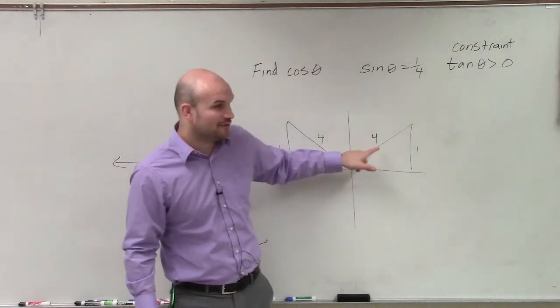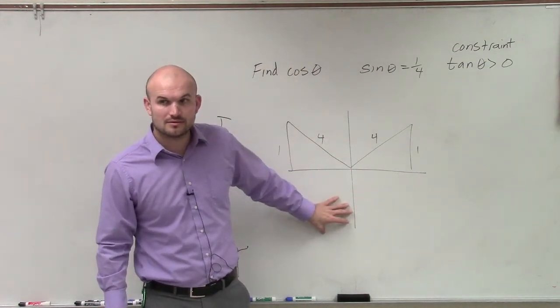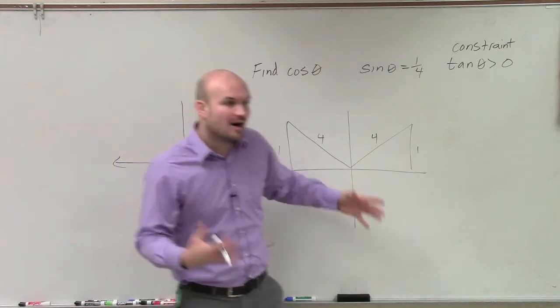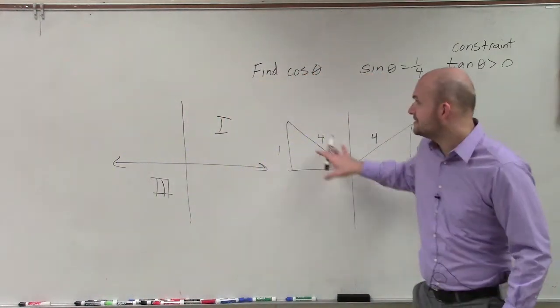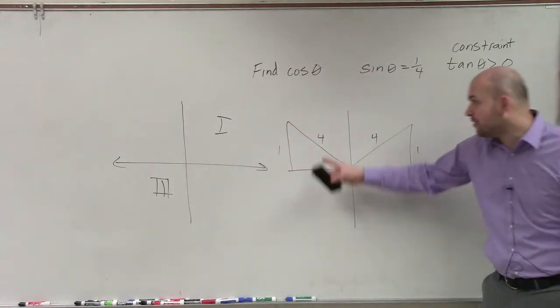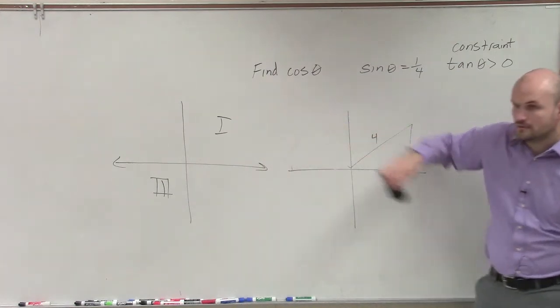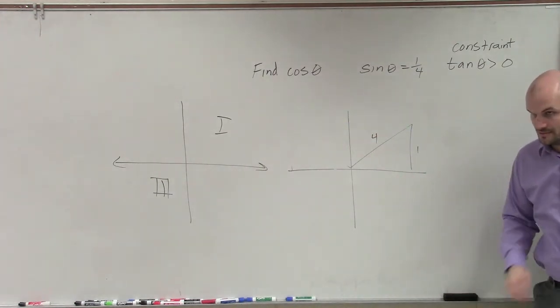But you have 1 over 4 and 1 over 4. Do you guys understand? But the constraint tells us it has to either be in the first or the third quadrant. Therefore, this triangle is not going to work. So we delete the triangle.